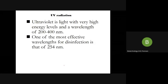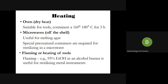UV radiation is germicidal and is present in the laminar air flow hood or cabinet; it can also be fixed in the room. It is non-ionizing radiation with a wavelength of 200–400 nanometers, with the most preferable being 254 nanometers. Precautions must be taken — you should not be present when UV radiation is on, because it leads to mutations.